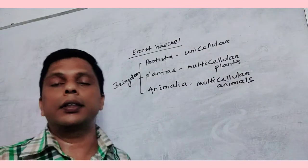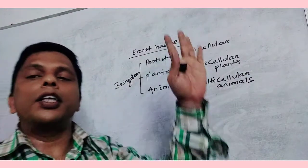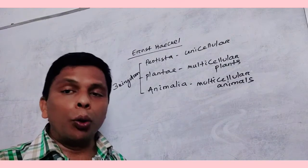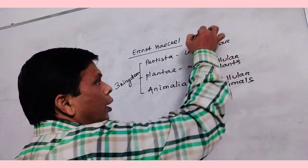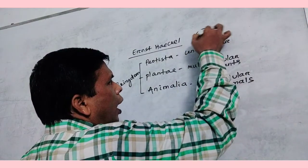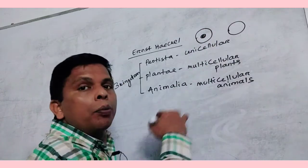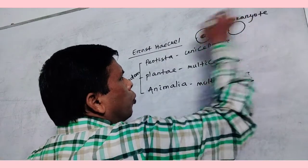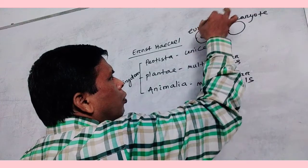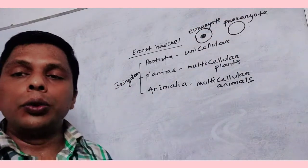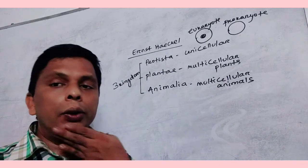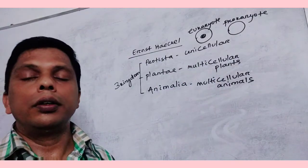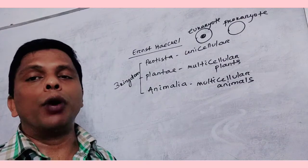But there was a drawback: unicellular organisms are of two types — some unicellular organisms have a nucleus while some do not. Those having a nucleus are eukaryotes, and those without a nucleus are prokaryotes. It is not possible to equalize prokaryotes with eukaryotes, so they cannot be kept in one group. Therefore the Haeckel system was rejected.